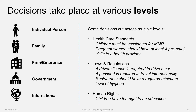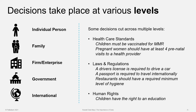Some laws and regulations affect us at different levels — for example, the requirement to have a driver's license to drive a car or a passport to travel internationally. Restaurants often have minimum requirements for levels of hygiene and food safety. All these regulations require some type of information and data. And even at the international level, we have requirements and treaties that governments sign on to — for example, in the area of international human rights, children quite often have the right to an education or to being safe, and governments and societies buy into those.